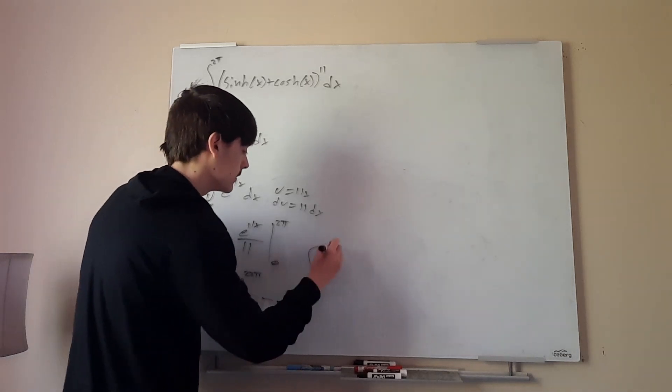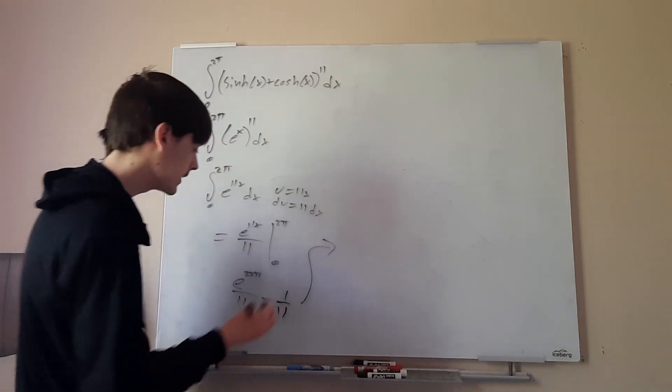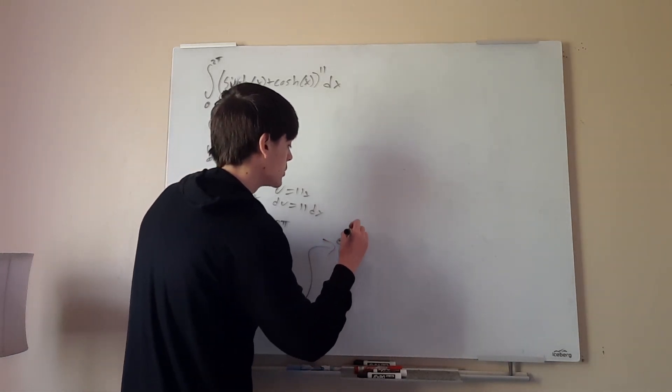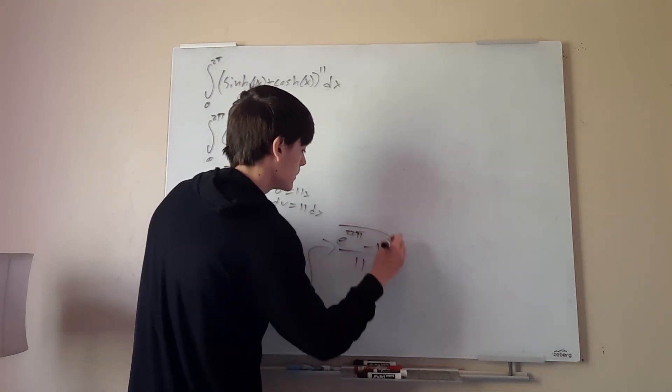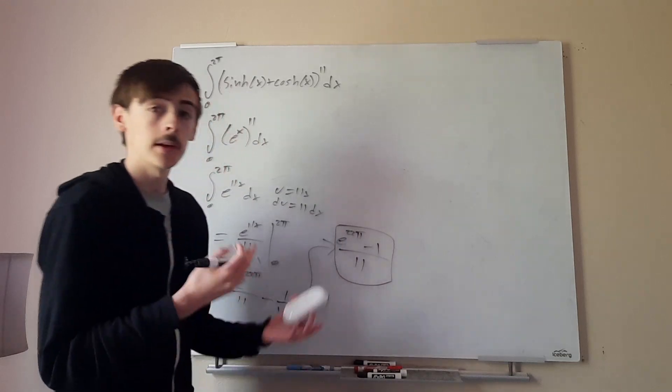This is our answer. We could simplify it, just combining the terms to make it look a little nicer. We'll have (e^(22π) - 1)/11. And that is our final answer. Pretty nice.